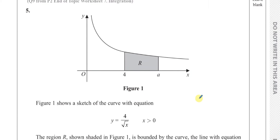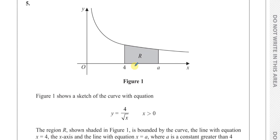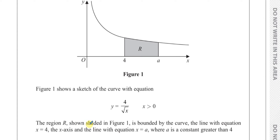Now this question tells us figure one shows a sketch of the curve with equation y equals four over the square root of x, where x is greater than zero. The region R, shown shaded in figure one, is bounded by the curve, by the line with equation x equals four, and the line with equation x equals a, where a is a constant greater than four.